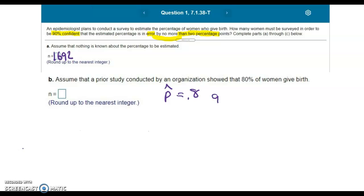If P hat is 0.8, then Q hat would be 1 minus 0.8, or 0.2.